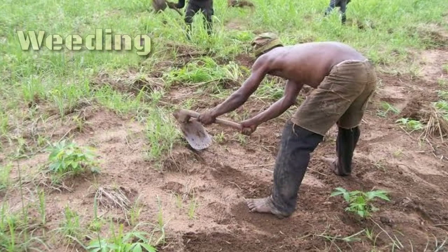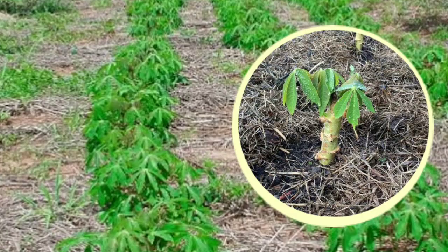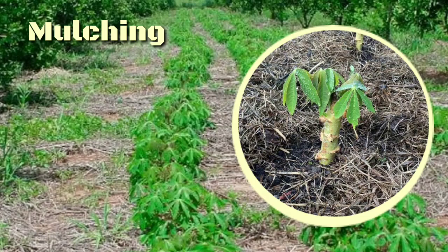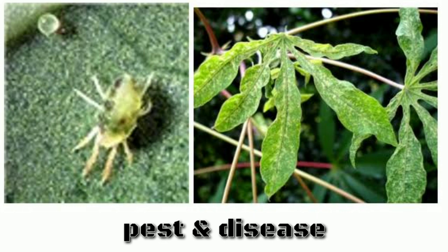Leguminous plants can also be planted between the crops to help fix nitrogen. Tapioca is prone to weeds during the initial stage of growth, so regular weeding must be carried out. Some farmers also practice mulching using leaves, which is the best way to achieve weed control and also preserves soil moisture.